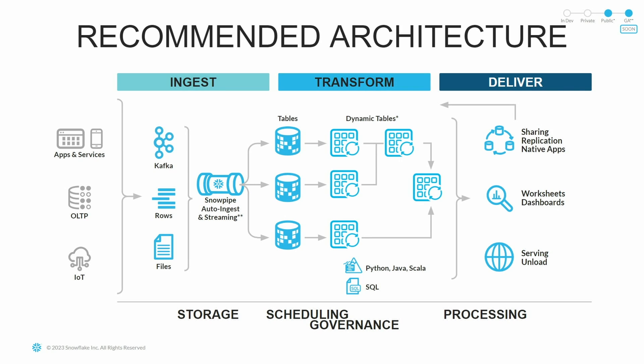Here's a recommended data architecture. Ingestion is the first part of your data pipeline. You have apps and services, mobile or web apps, OLTP databases, IoT devices — all coming through an ingestion method. You can send that to Kafka, have your applications communicate directly to Snowflake with Snowflake Streaming, or have files landing onto object storage brought in continuously. This all flows into a table, where you build dynamic tables on top to do custom joins, select statements, and complex transformations before delivering results to end users or machine learning models.